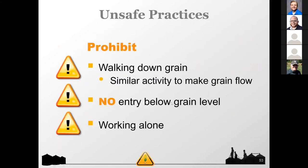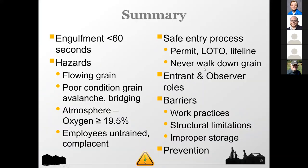In your facility, set up policies and procedures like lockout tagout, permit entry, housekeeping, and maintenance — set them and implement them beforehand. Give your workers the needed training so they understand the hazards themselves. Do not allow unsafe activities like walking down the grain — that's one of the most dangerous. Do not enter below grain level, and do not work alone. Quick summary: engulfments take less than 60 seconds; flowing grain is a main hazard; watch out for poor grain conditions and the atmosphere; train your employees; use lockout tagouts and lifelines; and never go into a grain bin alone.